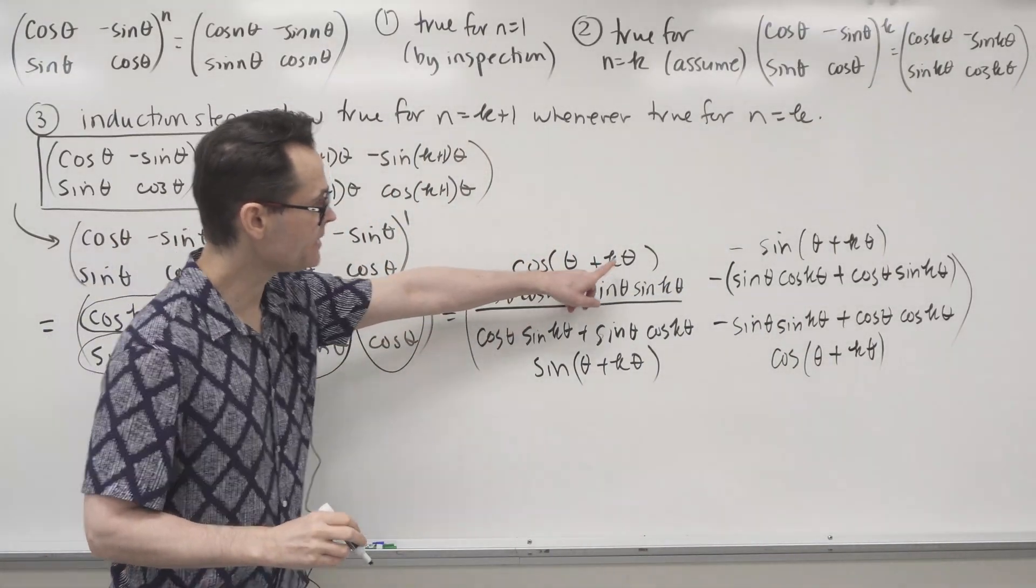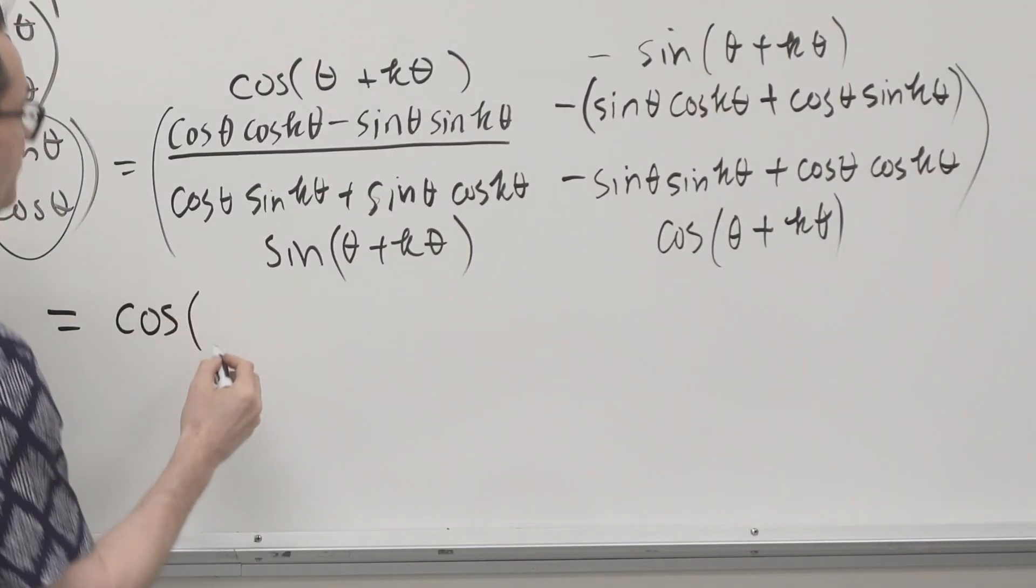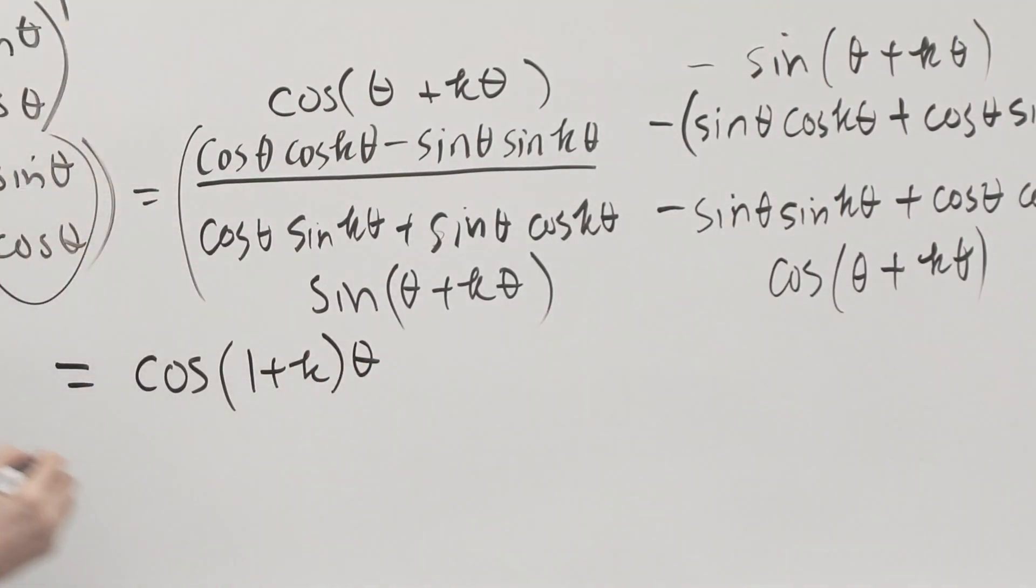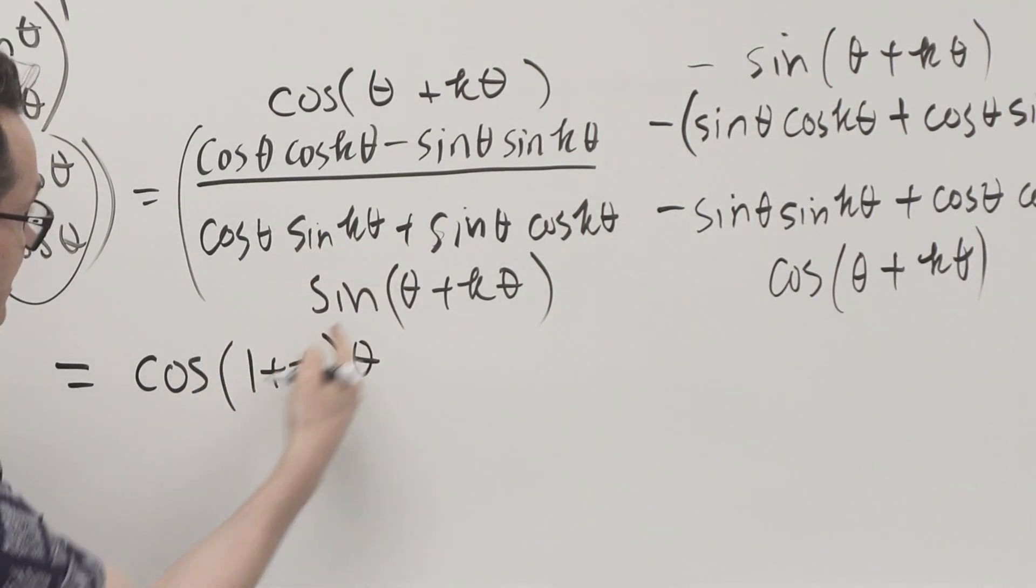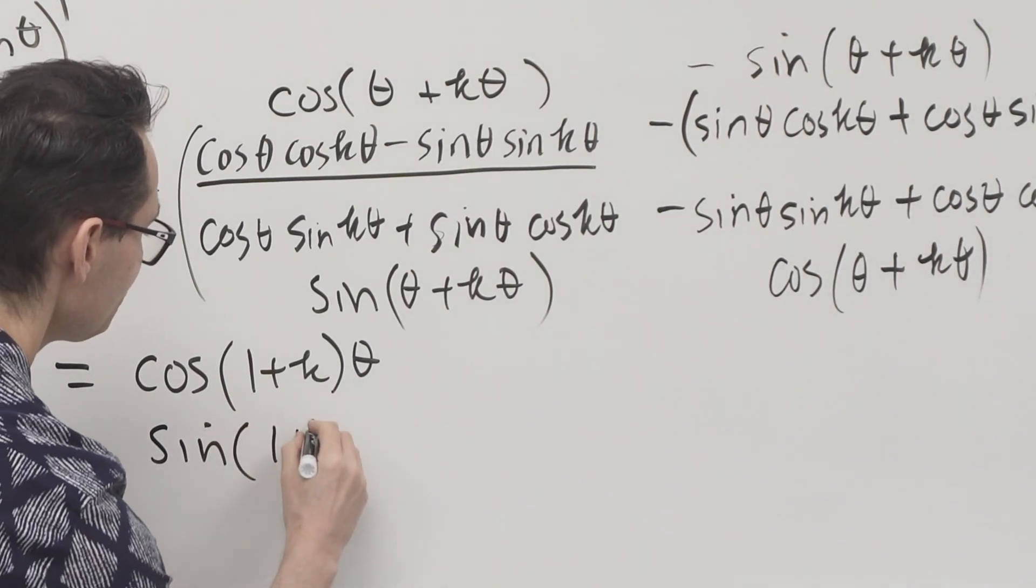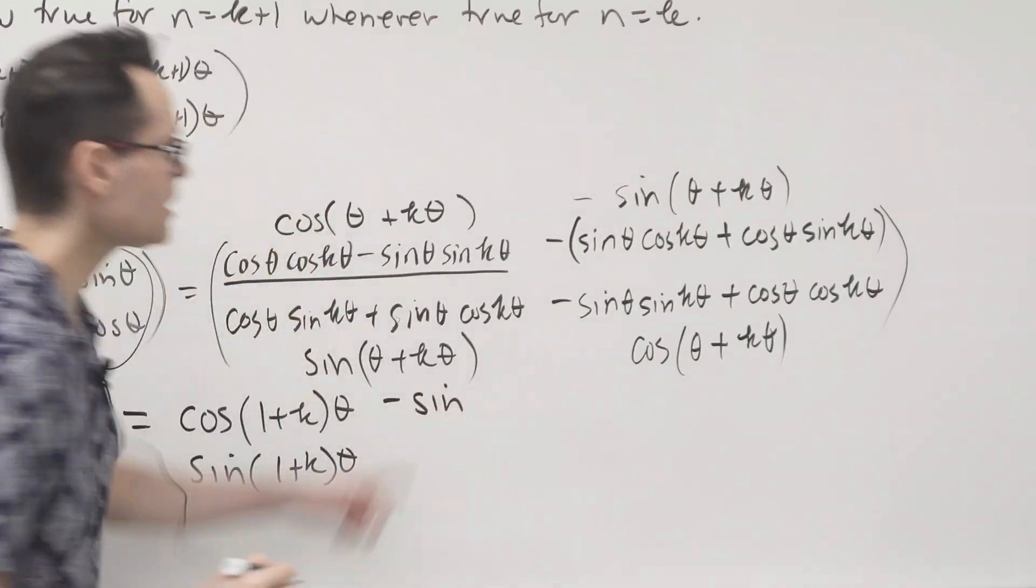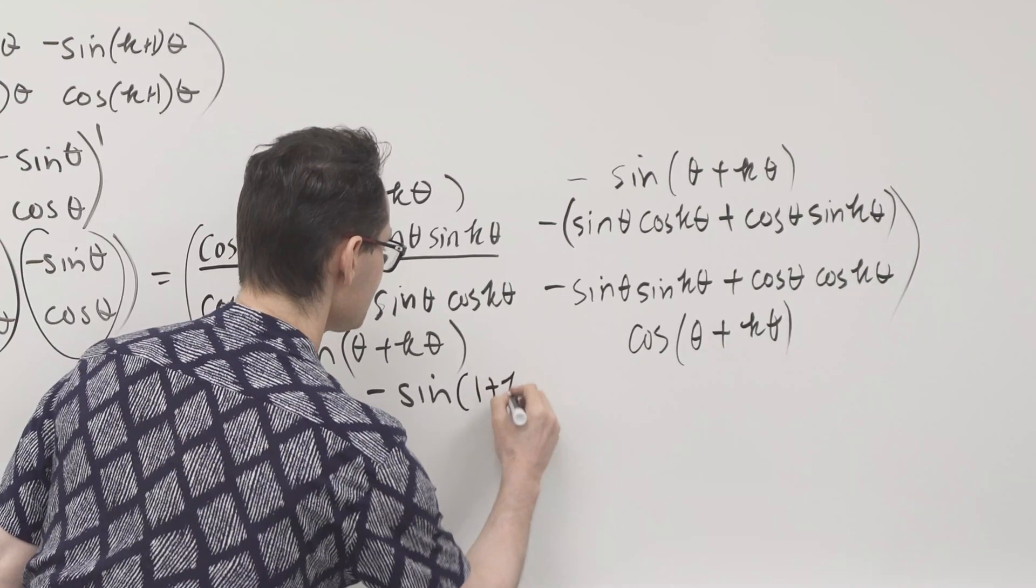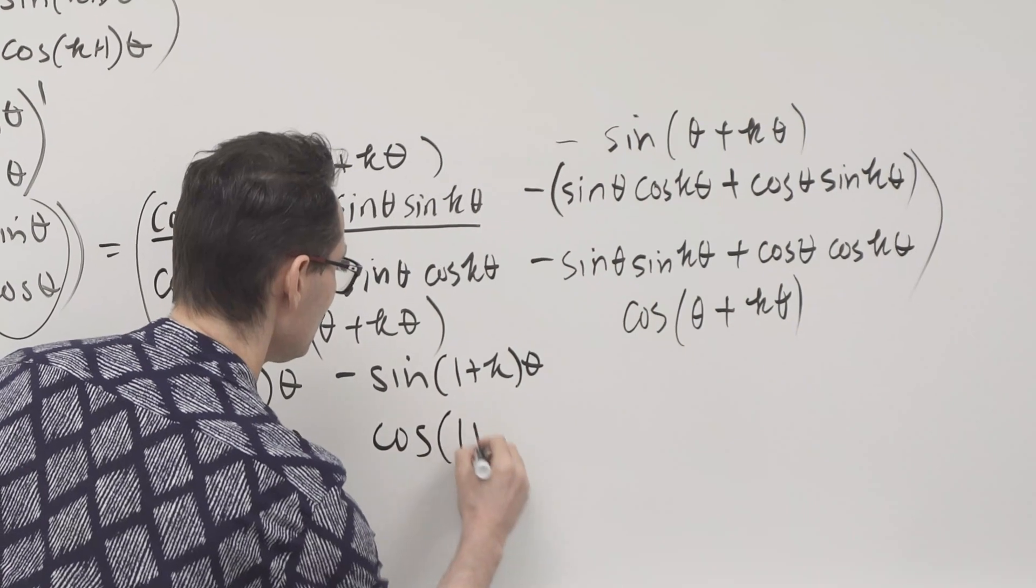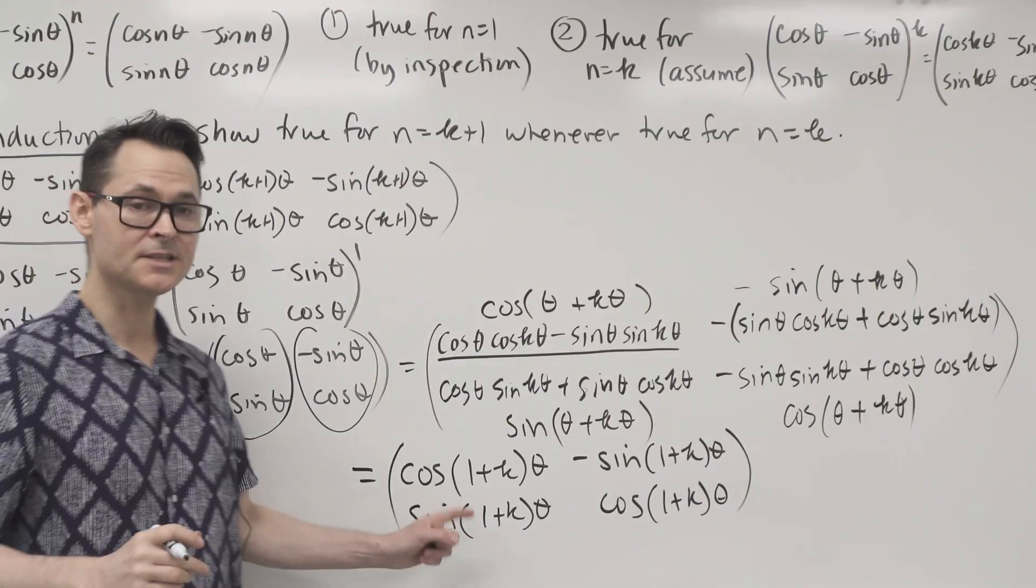Because now look, I can factor a theta out of each of these expressions. So finally, this is going to be equal to cosine, I'll take the theta out, which leaves 1 plus k theta. And down here, I'm going to take the theta out. So that's going to leave a sine 1 plus k theta. And then here, I've got a negative sine. Take the theta out. So 1 plus k theta. And then finally, cosine 1 plus k theta. And I'll put my matrix brackets around that.